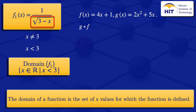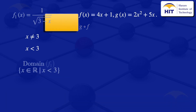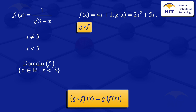I will now move on to the next question: finding the composition of the two functions g and f. By definition, the composition of g and f equals g of f of x. So I can write g(f(x)), and we have f(x) = 4x + 1.